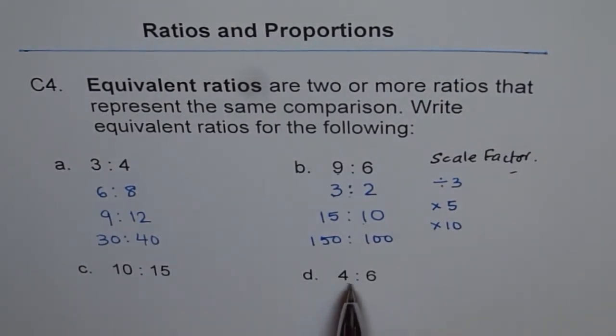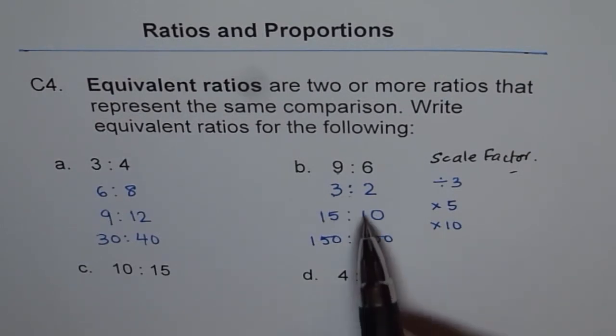Now here are two more questions for you to do. Write down at least three equivalent ratios for both of them. 10 is to 15. You can divide both by 5 like this and then go ahead. 4 is to 6. You can divide them by 2 and then work like this.